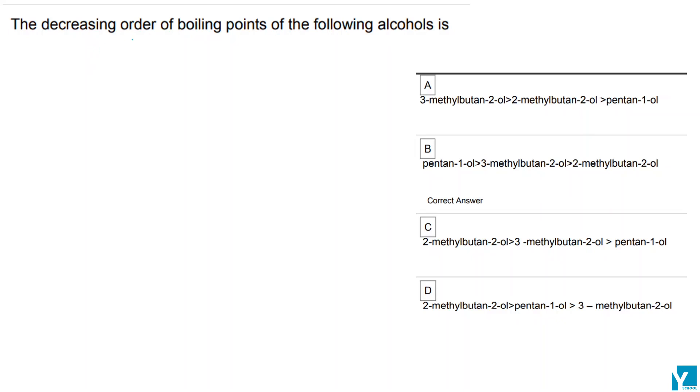The question is: the decreasing order of boiling points of the following alcohols is. We have pentane-1-ol, we have 3-methylbutane-2-ol which is like this.